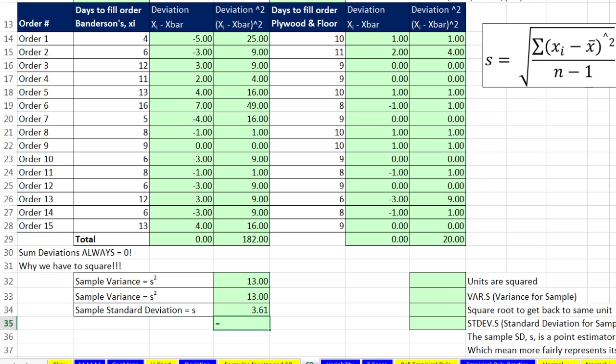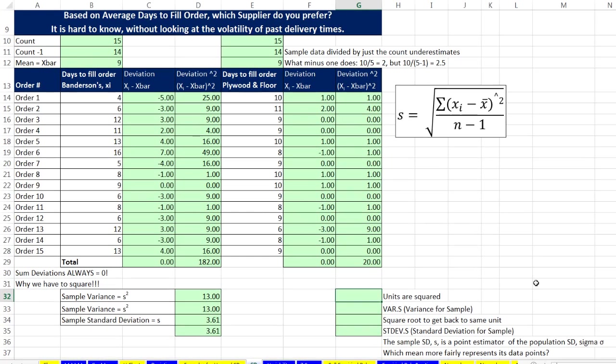Of course, there's a built-in function, STDEV, and there's a P for population and S for sample. We go to our source data, and that's how we're going to do it moving forward in the class. We simply use the standard deviation for the sample function, and we get 3.61. Now what that means is that Banderson has, on average, a deviation of 3.61 days. Now let's do our calculations over here for plywood and floor. The sum of all the deviations squared divided by n minus 1. There's our variation.